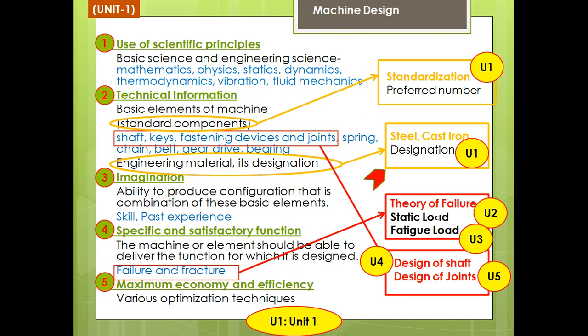This slide I have already explained — it covers what machine design is and the five topics in our syllabus: Unit 1, Unit 2, Unit 3, Unit 4, and Unit 5. Preferred number we have already studied. In today's class, we have to study the designation of steel and cast iron, which also comes under Unit 1.